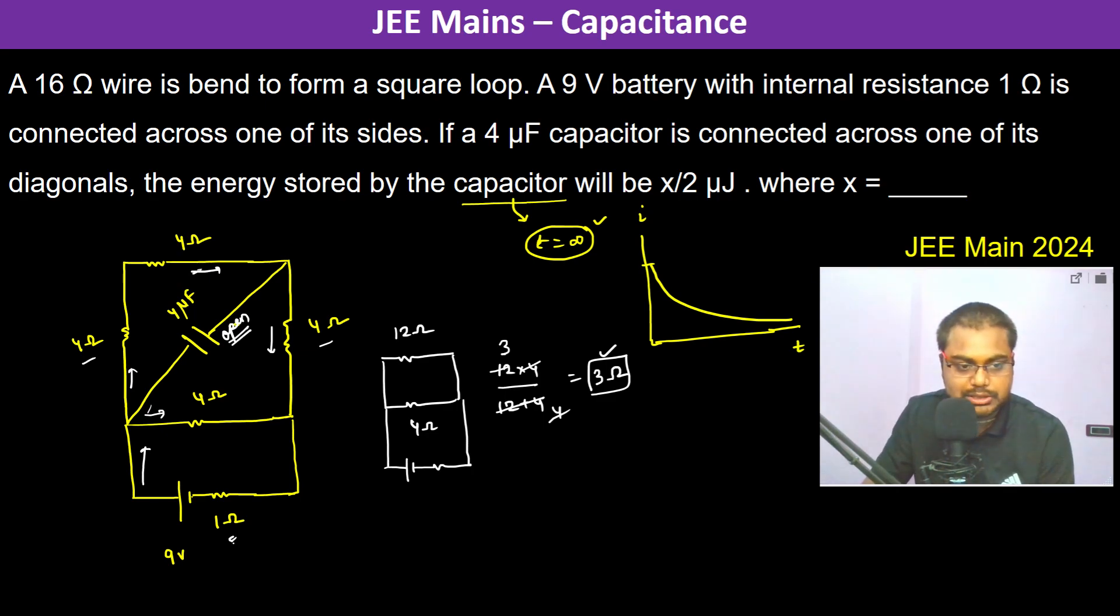So therefore the current is 9 by 4 ampere. Now 9 by 4 ampere current will be redistributing in such a way that the potential difference is going to be the same.